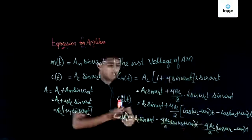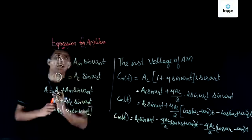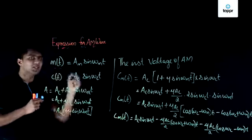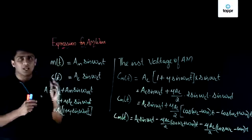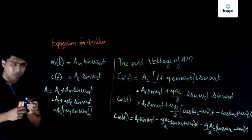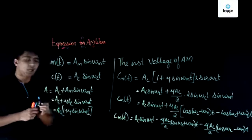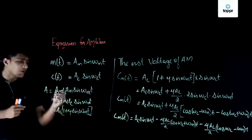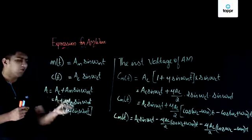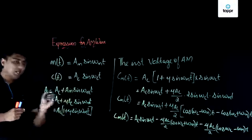This is the final expression for the amplitude modulated wave. To summarize how we derived it: there are two signals — the modulating signal Am·sin(ωm·t) and the carrier signal Ac·sin(ωc·t). After modulation, the amplitude becomes Ac + Am·sin(ωm·t), which equals Ac + μ·Ac·sin(ωm·t), where the modulation index μ = Am/Ac.